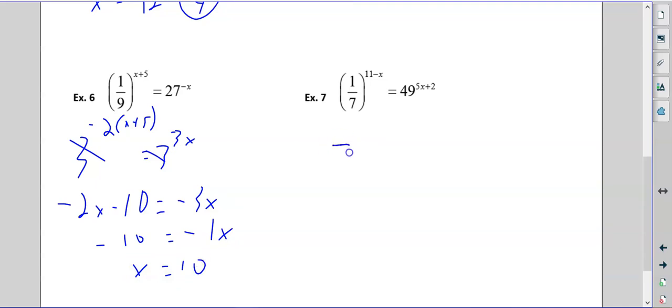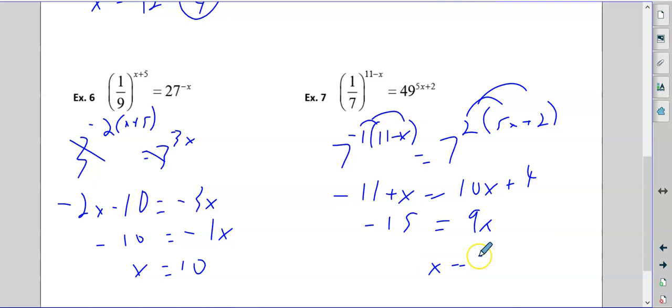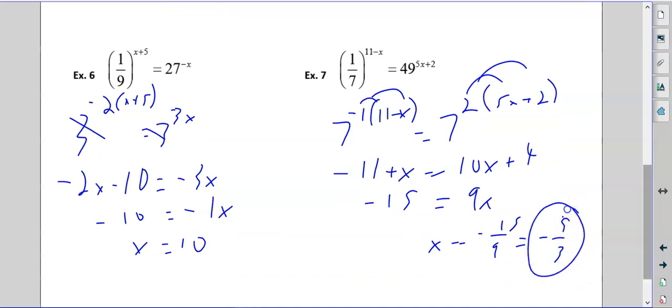I just look at the 7 and 49. 7 to the 1 is 7. So 7 to the negative 1 is 1 over 7. Very simple. Adjustment in our heads. 11 minus x equals 7 squared. 5x plus 2. Distribute the negative 1. Distribute the 2. I'm going to subtract x and get 9x. I'm going to subtract 4 and get negative 15. Divide by 9, and I get negative 15 over 9. Divide by 3. Negative 5 thirds. Again, this is one that looks nasty. But if you actually wanted to plug it in, it will work out. And you have a calculator to do all the work.